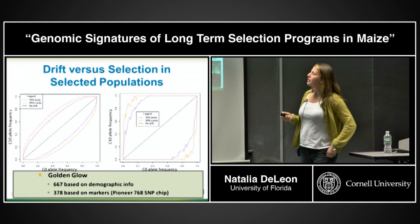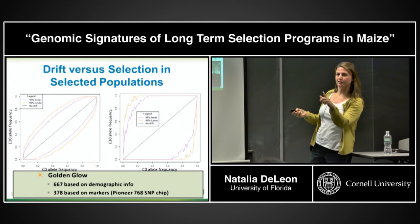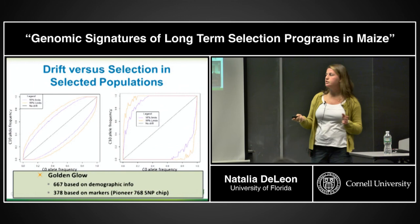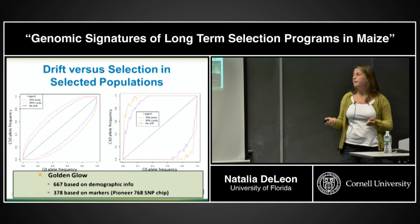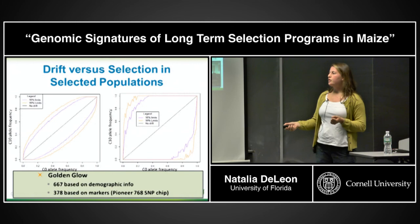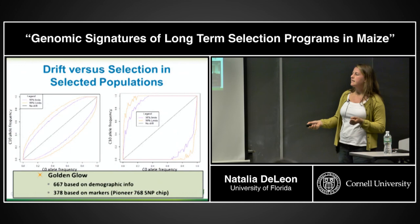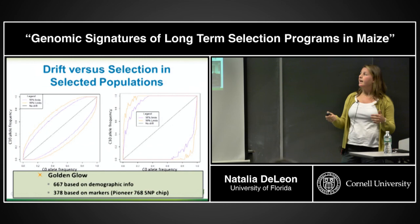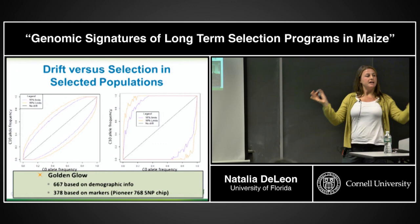For Golden Glow, if we look at the demographic information, the effective population size is about 667 individuals. An analysis using the 768 SNP chip from Pioneer gave a number around 378 — though this is biased due to selection. So the effective population size is somewhere between 380 and 670: a relatively large effective population size and fairly high selection intensity. But because we only have one stream and one direction, we can't definitively say which sites are selected versus drifted.